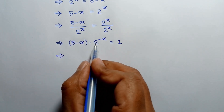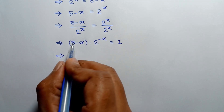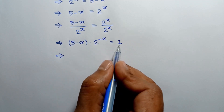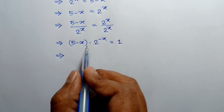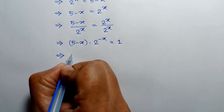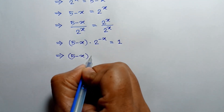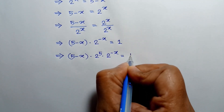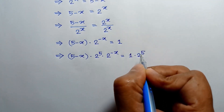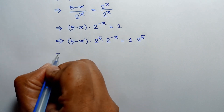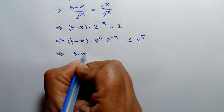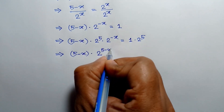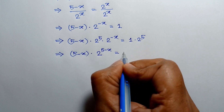The power of 2 is negative x and the coefficient is 5 minus x. To make the power and coefficient the same, we multiply both sides by 2 to the power 5. Multiplying both sides by 2 to the power 5, we get (5 minus x) times 2 to the power (5 minus x) is equal to 32.